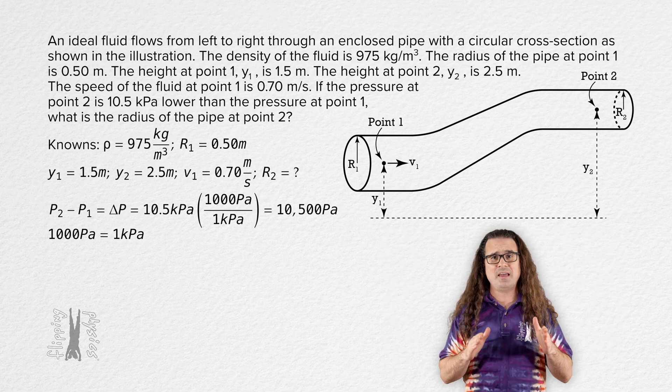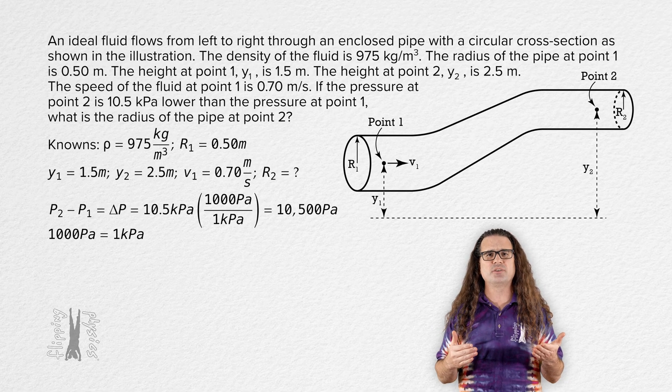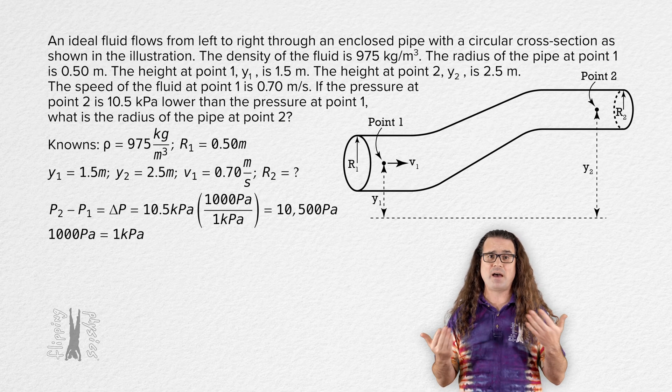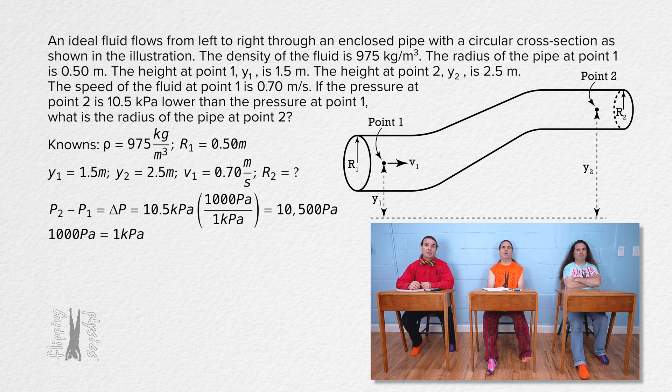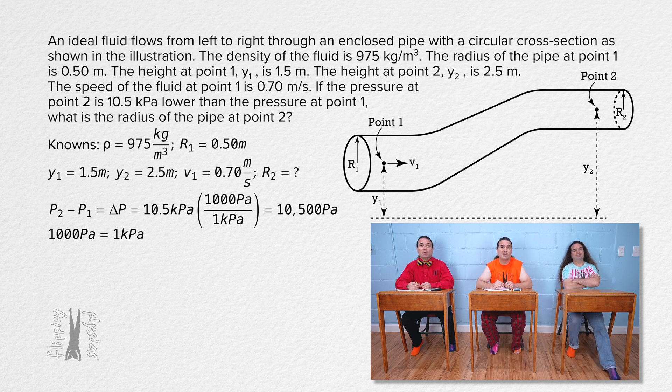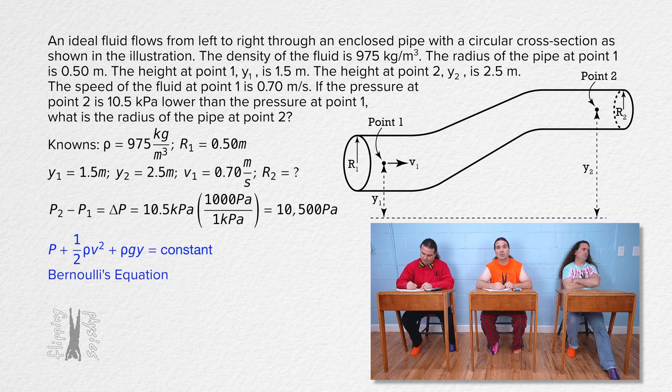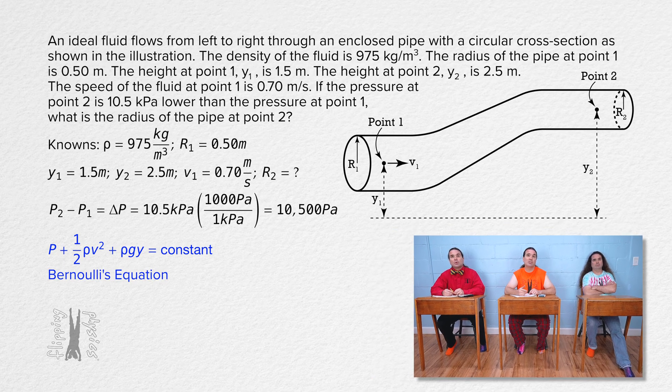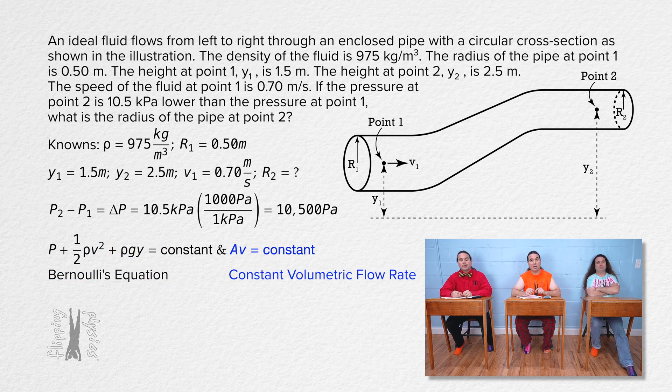Great, thanks. Realize the pipe extends to the left and right of what we are showing in the illustration, we're just showing a small section of the pipe. Bobby, please give us a general idea of how to solve this problem. Okay, this is an ideal fluid flow through an enclosed container. We know that is an example of a situation where we can use Bernoulli's equation. Pressure plus one half fluid density times speed squared plus fluid density times gravitational field strength times vertical height is constant. Oh, and this is a situation where the volumetric flow rate remains constant. Cross-sectional area times speed is constant. So, we can use both of those concepts to solve this problem.